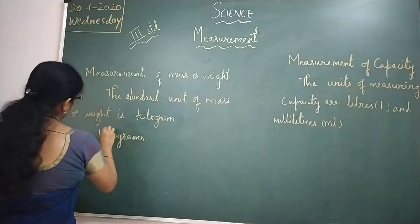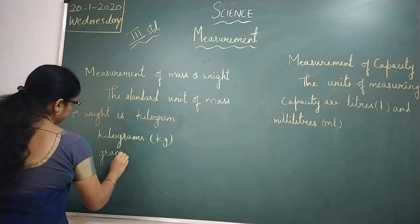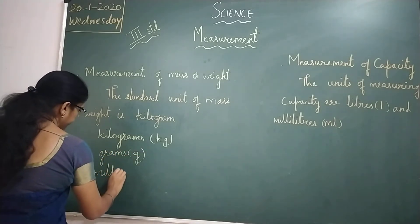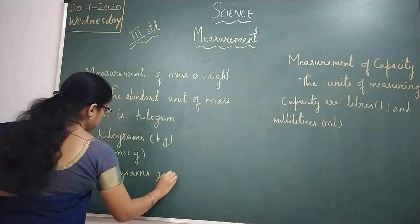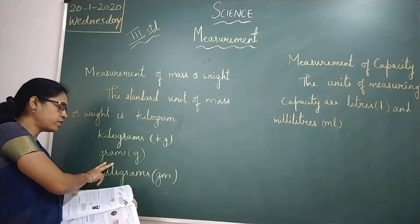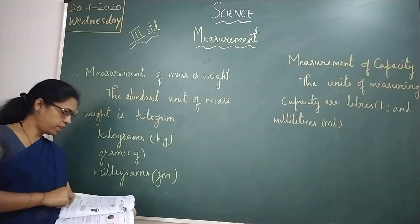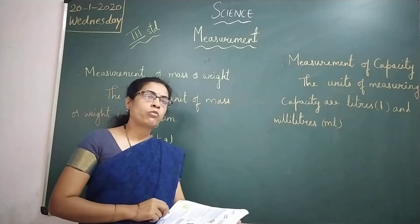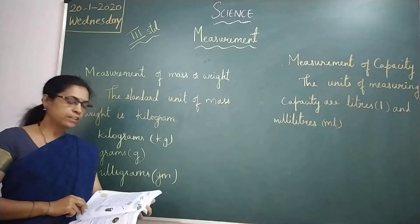That is kg, grams (g), and milligrams (mg). Smaller weights are measured in grams, and heavy weights are measured in kilograms. The standard unit of mass or weight is kilogram.